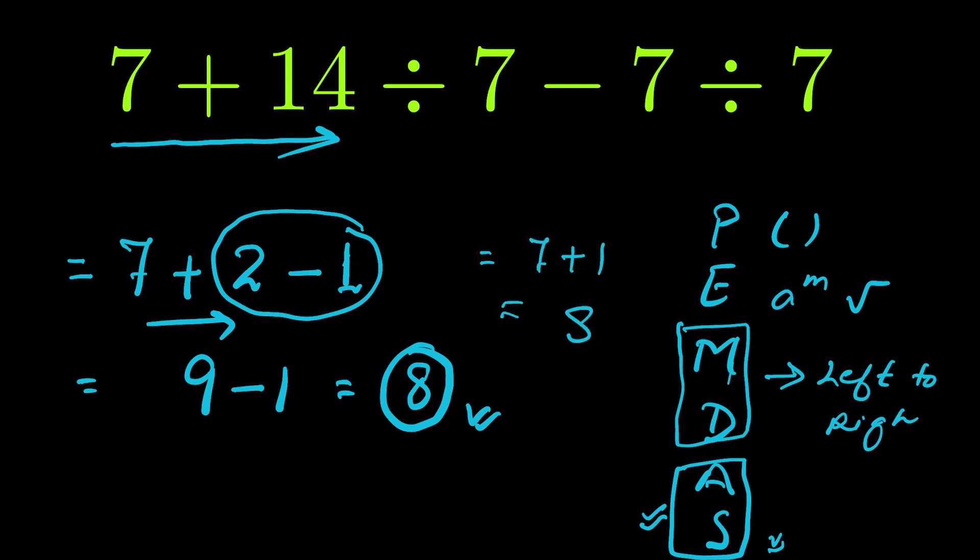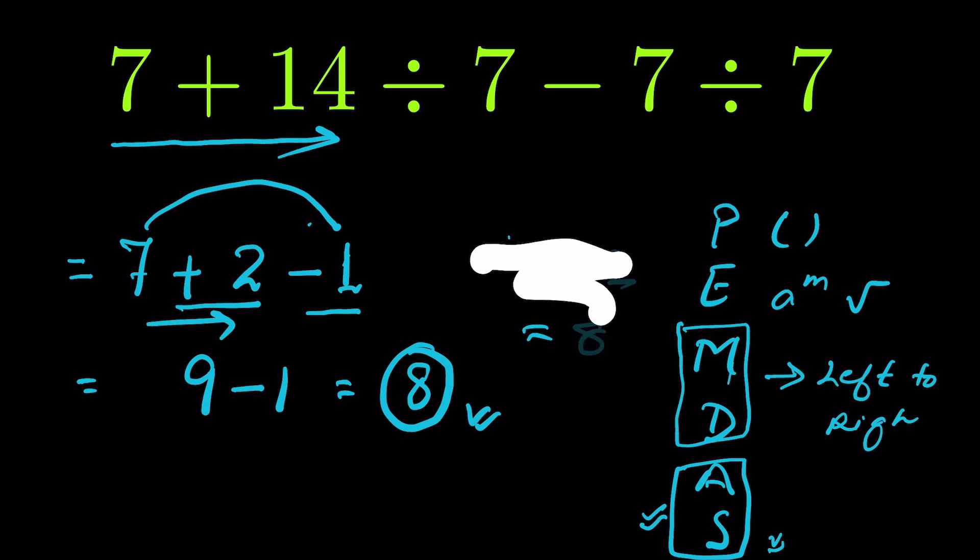Or we can do this also: this 1 has a minus in front of it, so we can do 7 minus 1 equals 6, and then plus 2 equals 8. So there are multiple ways that we can do addition or subtraction; each time we'll get the same answer.